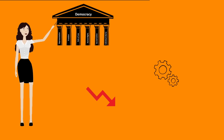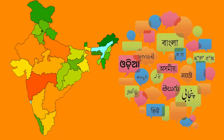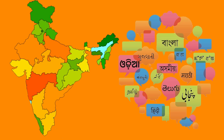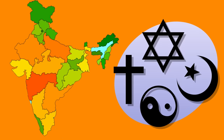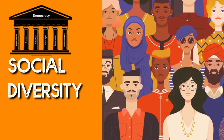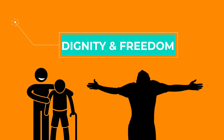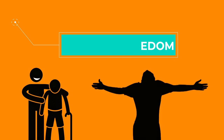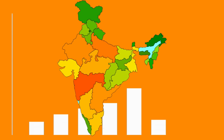In democracy, economic development is a bit slow, but its positive features are more. Like in India — such a big country where people speak different languages and follow different religions — democracy is an important thing that has maintained social diversity. At last, democracy maintains our dignity, gives us freedom, and these aspects are very important to run a country efficiently.